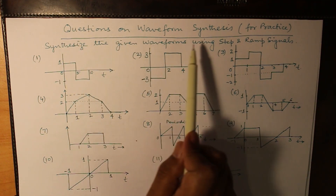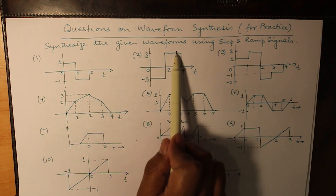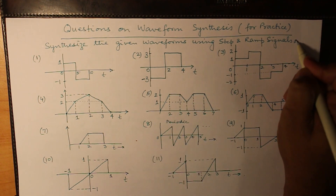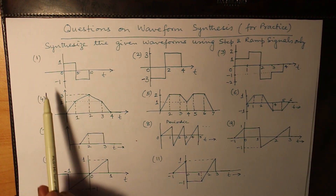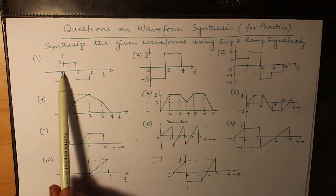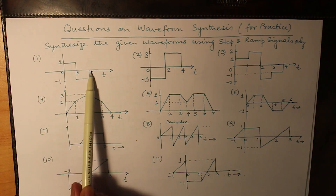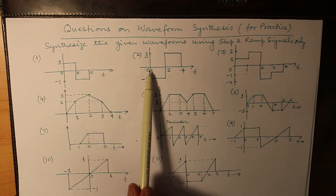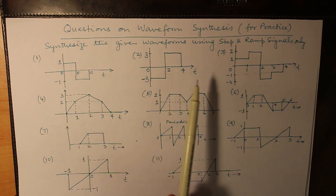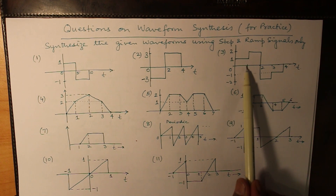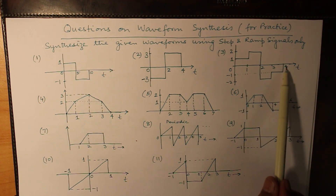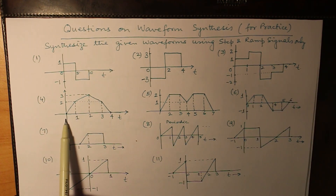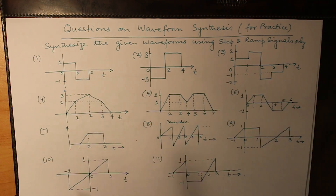These are practice questions on waveform synthesis — synthesize the given waveforms using step and ramp signals only. For question 1, there are changes of magnitude at t equals 0, 5, and 10, so there will be 3 terms. In question 2, changes at t equals 0, 2, and 4 — again 3 terms. In question 3, changes at t equals 0, 1, 2, 3, and 4 — so there will be 5 terms. Questions 1, 2, and 3 use only step signals; questions 4, 5, and 6 use only ramp signals.